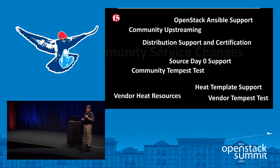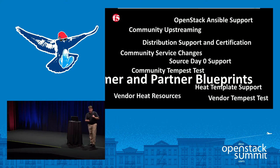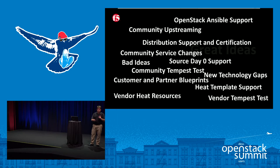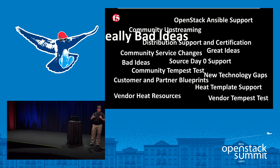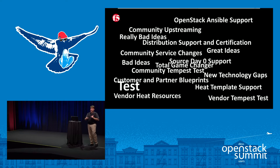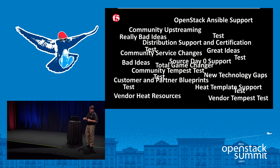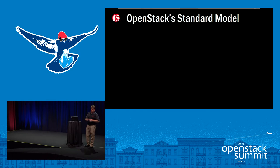Once we got going, we started seeing all sorts of other requests. If you've noticed how diverse the topics are here — bad ideas, great ideas, really bad ideas — you know this can be a little chaotic. It can be hard for a vendor to respond to, figure out where everything is, how to test everything, and put it all together. But the fundamental reason why a vendor still wants this is because there's a standard model with OpenStack.